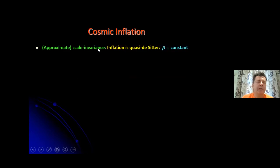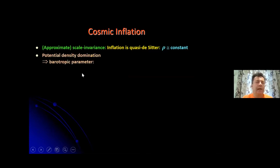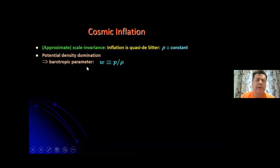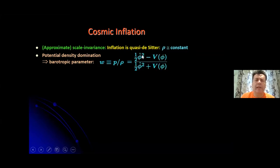Approximate scale invariance means that inflation is of a particular type called quasi-de Sitter inflation, in which the density of the universe during inflation is roughly constant. In the context of the inflationary paradigm, where the scalar field is responsible for inflation, the barotropic parameter — the ratio of pressure over density — is given by the difference between kinetic energy density minus potential energy density over their sum. Because the inflaton paradigm requires potential energy domination, the barotropic parameter is close to minus one.